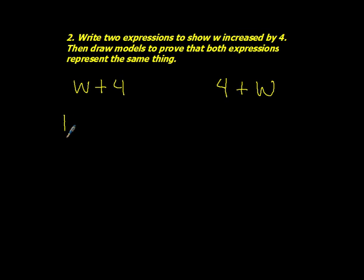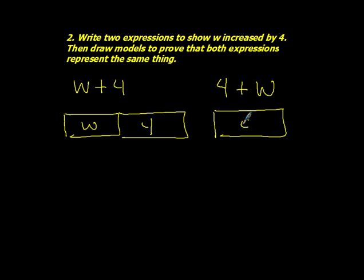And our two drawings, we could have w here plus our 4. Or we could have our 4 plus our w. And just to reiterate from earlier, the size of the w piece doesn't matter that much. I would just make it a different size than your 4 piece, just to indicate that it's a variable.